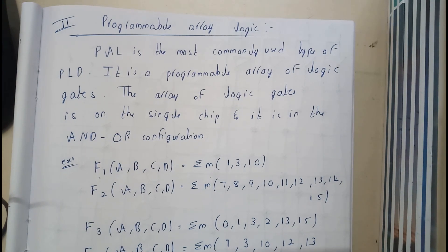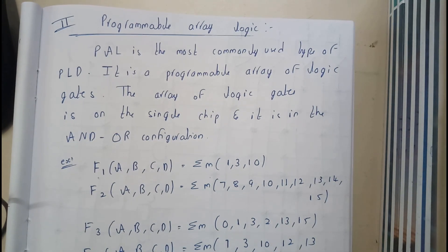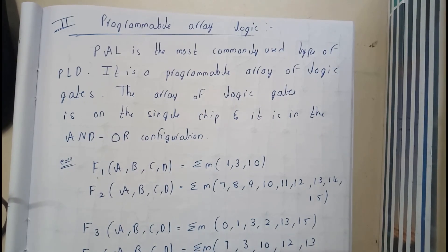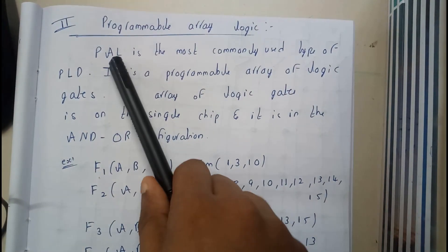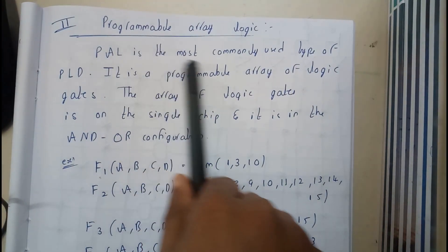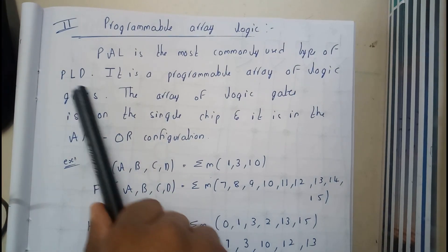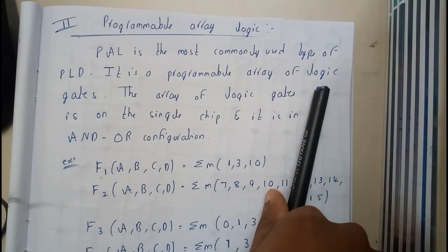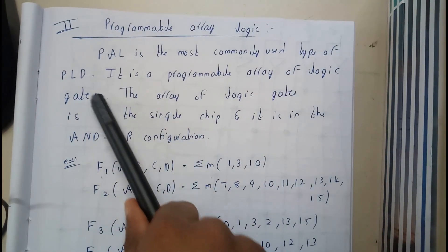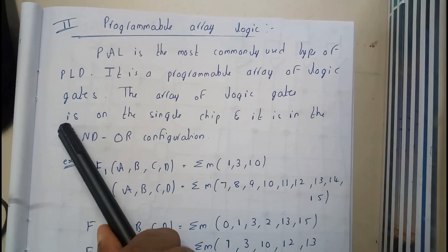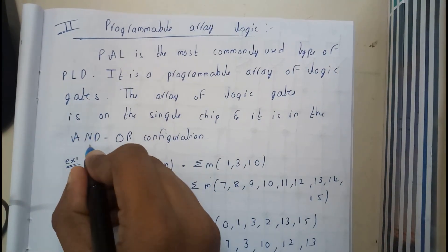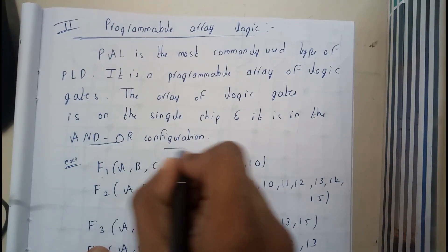Hello guys, we are back with our next tutorial. In this tutorial, let's go through Programmable Array Logic. Basically, PAL is a most commonly used type of PLD. It is a programmable array of logic gates. The array of logic gates is in a single chip. It is in AND-OR configuration.